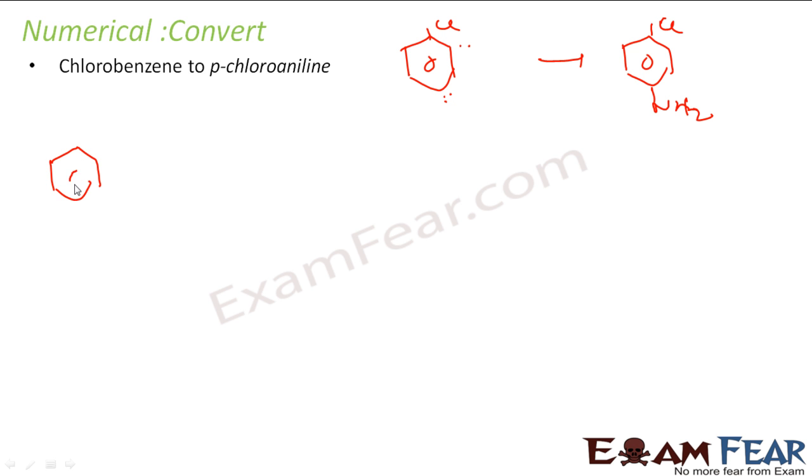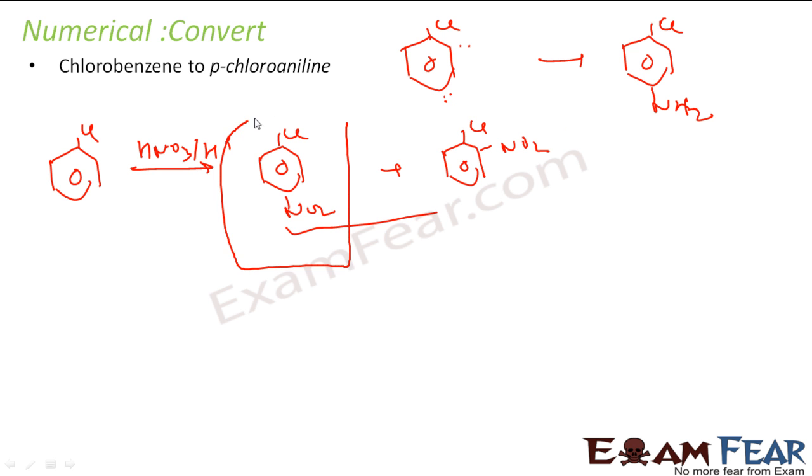Let us do this. I have chlorine. Let us do a nitration. So what I will get is this compound and this. I can easily separate them because they have different boiling points, different intermolecular forces. So I can do a distillation and take out this.